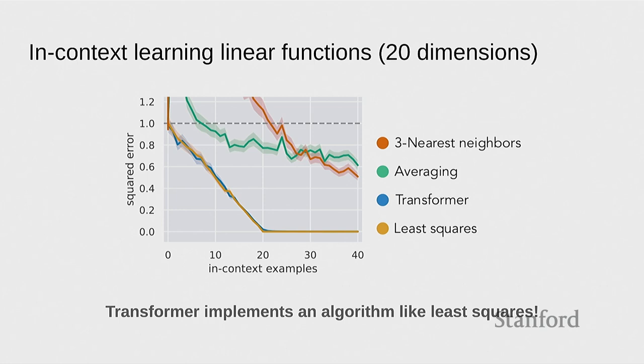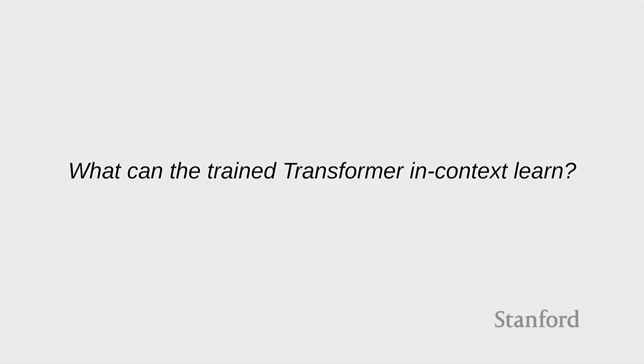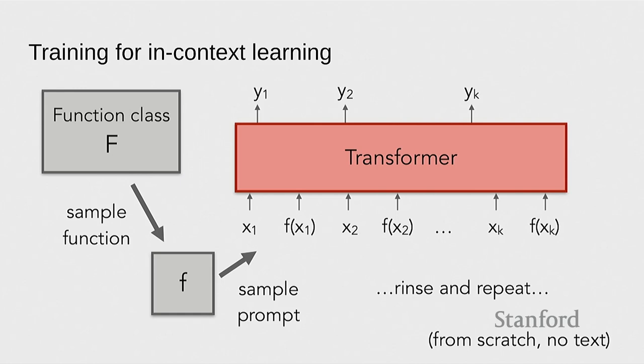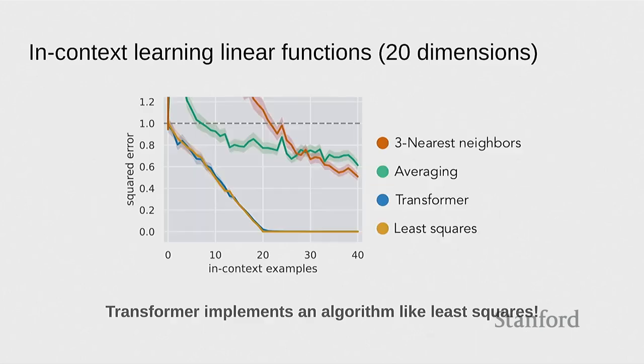Question: does the order of the input examples matter, or if you reordered x1, x2, ..., xk, would you get the same results? In this case, it doesn't really matter because each of these x's are actually generally drawn i.i.d. So there's no information in the ordering.